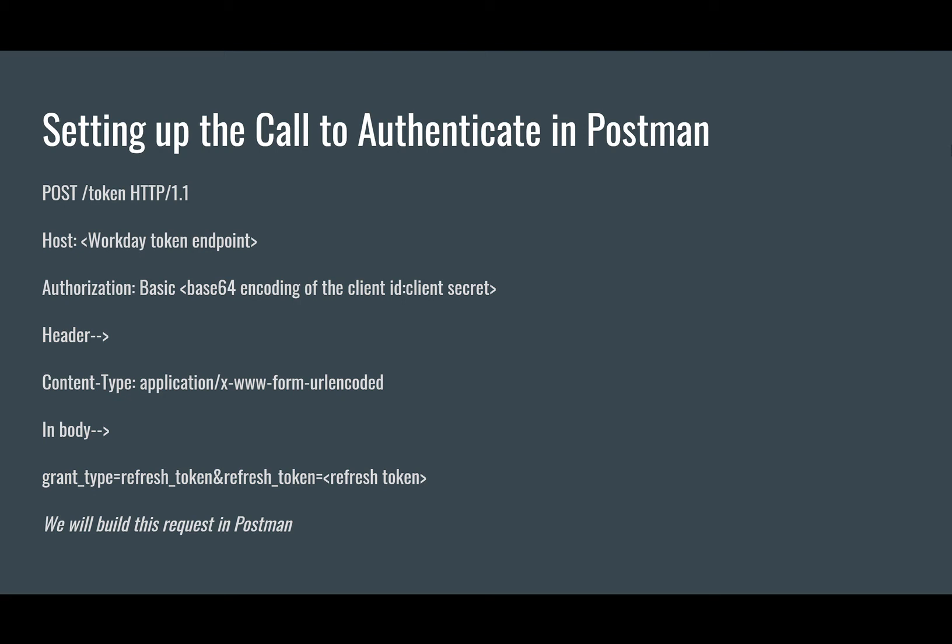Welcome back. Now that you have the basic things needed to make an authentication call, let's get to work. From registering our API client, we have the Workday token endpoint, the client ID, the client secret, and the refresh token — we need all of that to build our request to get the access token.